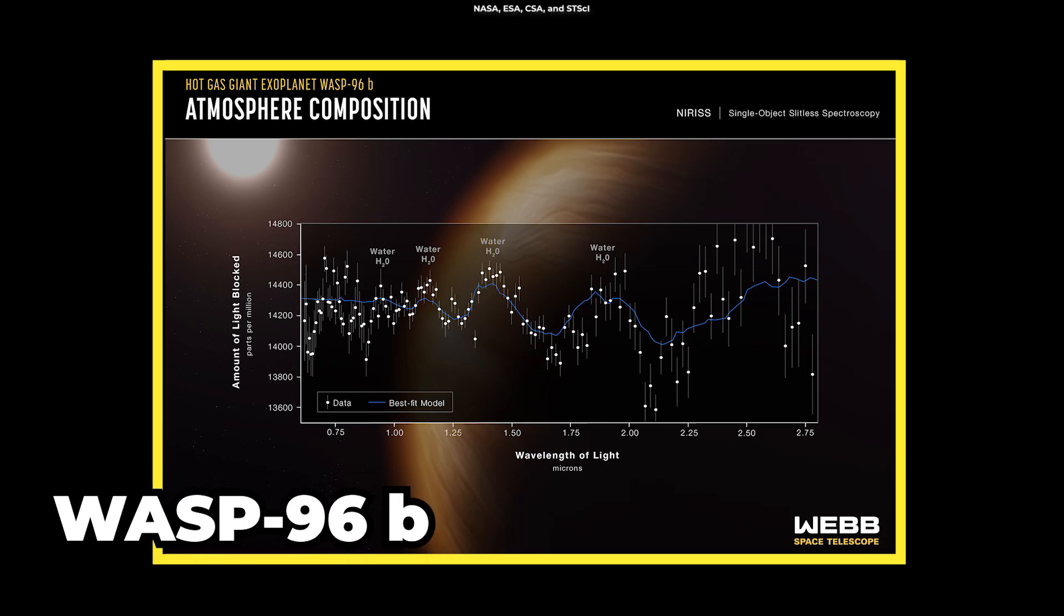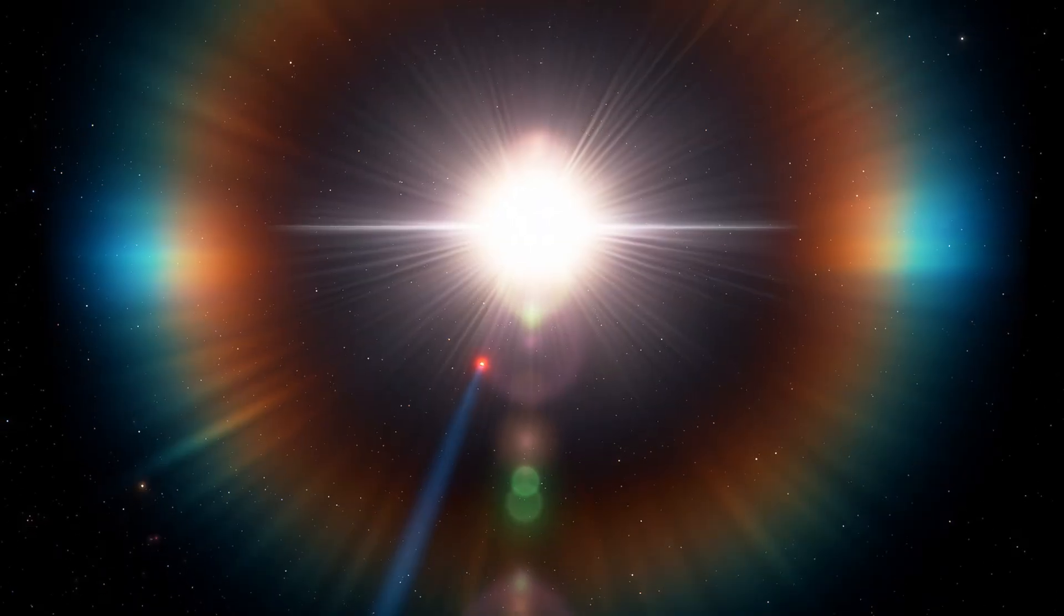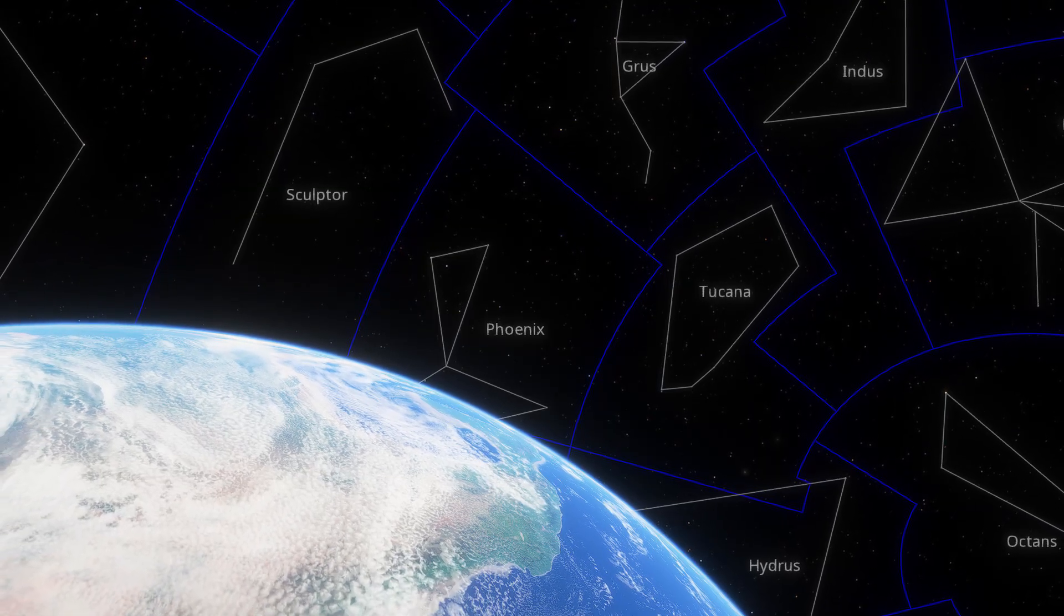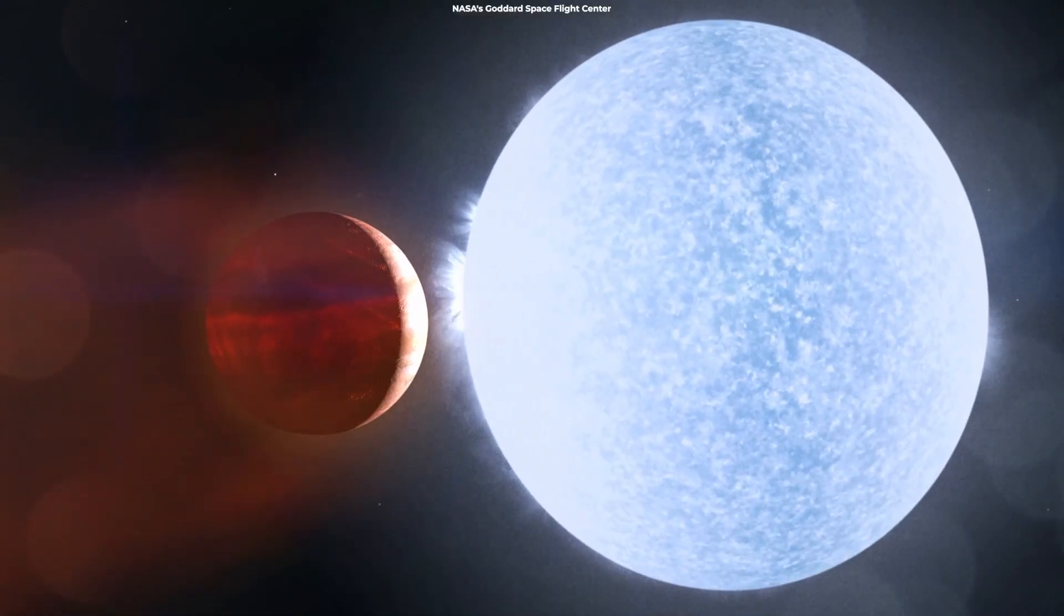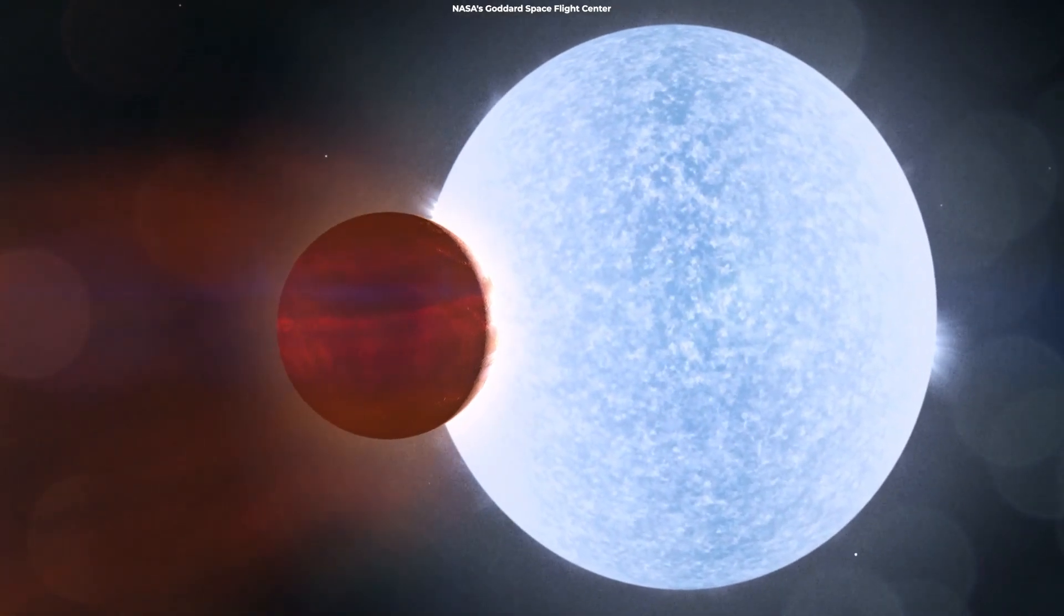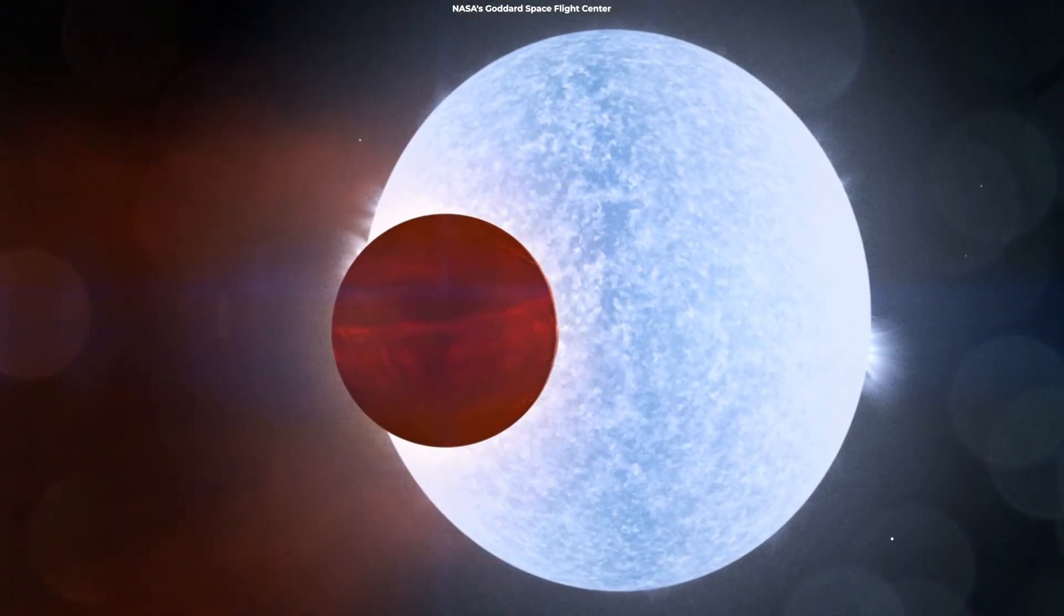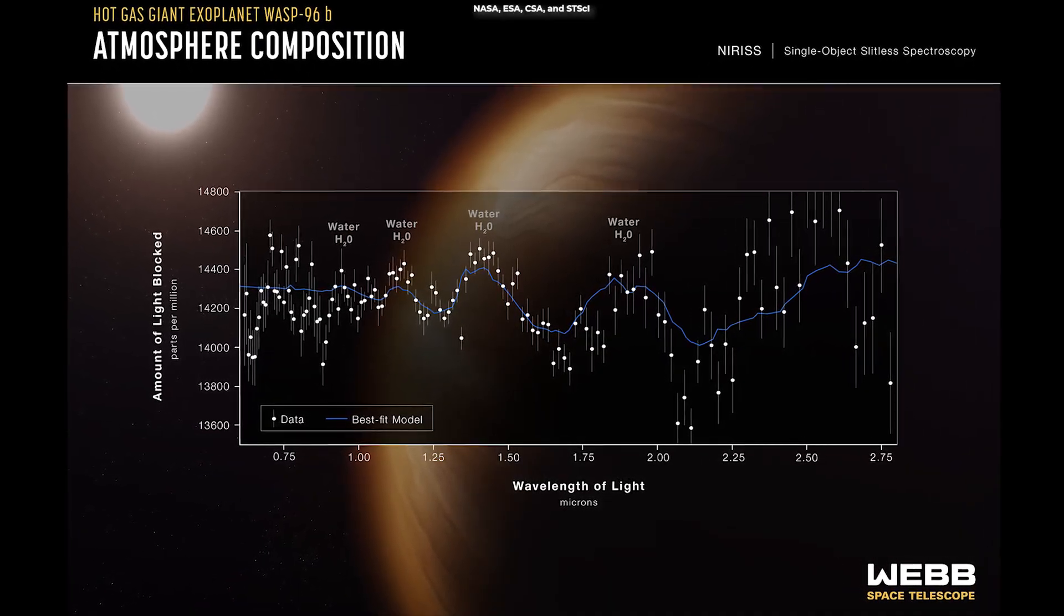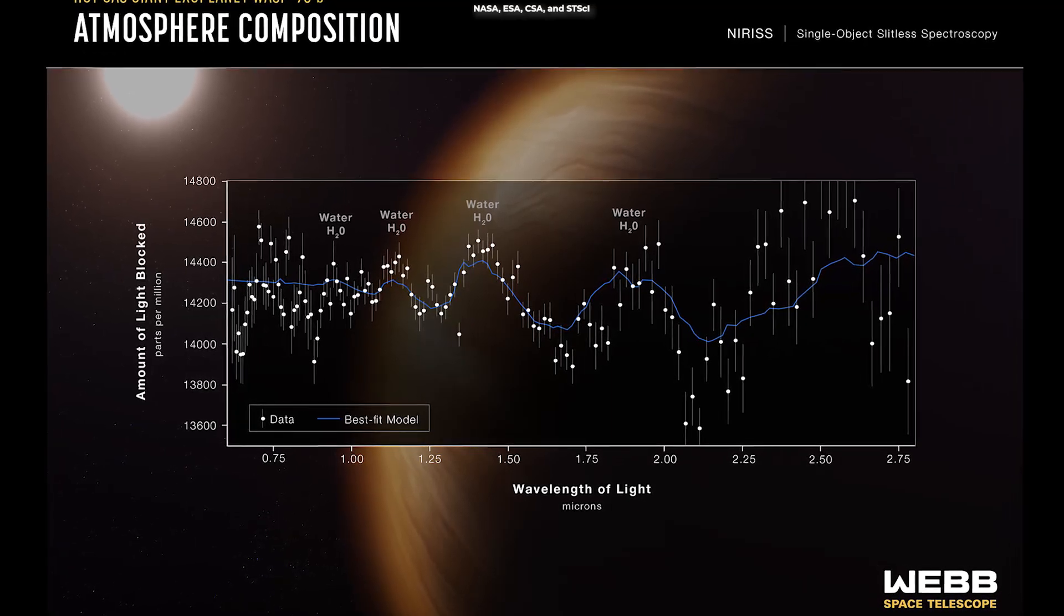In the second one, Webb's focus goes to WASP-96b, a giant gaseous exoplanet located about 1150 light-years from Earth. The planet has about half Jupiter's mass and orbits its parent star every 3.4 days. Here, the telescope has captured the distinct signature of water, along with evidence of clouds and haze,